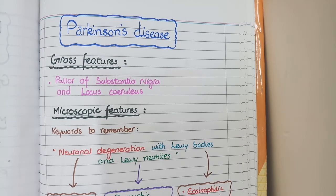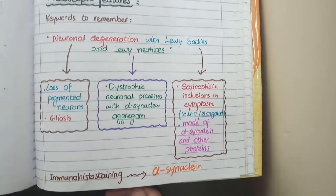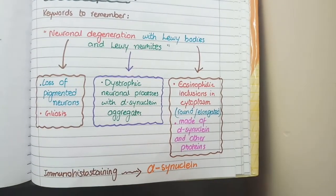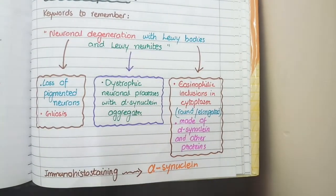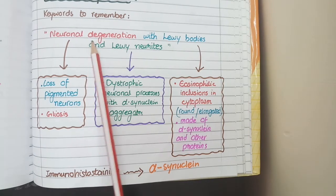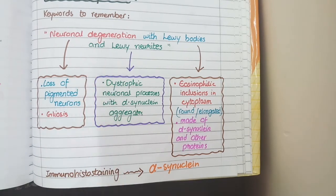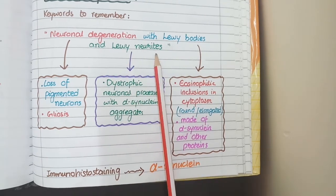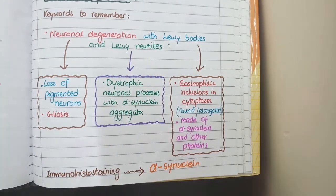For microscopic features of Parkinson's disease, the keywords to remember are neuronal degeneration with Lewy bodies and Lewy neurites. In Parkinson's disease there is neuronal degeneration in the substantia nigra, along with formation of specific structures called Lewy bodies and Lewy neurites. Let's translate this into a microscopic picture.